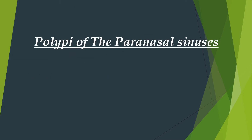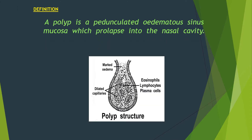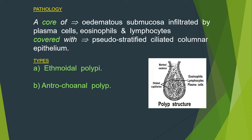Now we move to another topic: polypi of the paranasal sinuses. A polyp is a pedunculated edematous sinus mucosa which prolapses into the nasal cavity. The pathology of the polyp: a core of edematous submucosa is infiltrated by plasma cells and lymphocytes, covered by pseudostratified ciliated columnar epithelium.